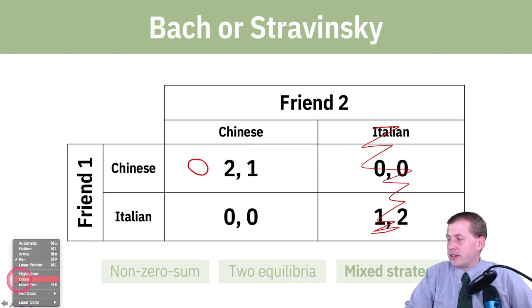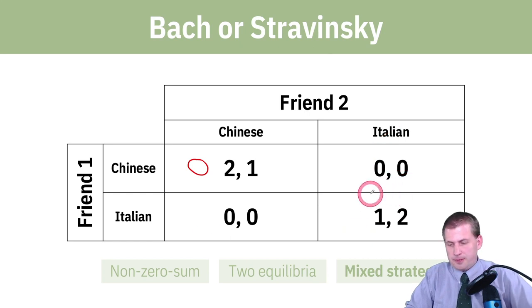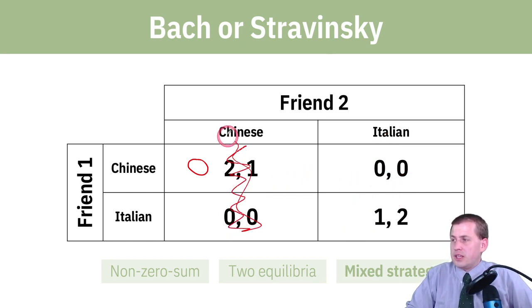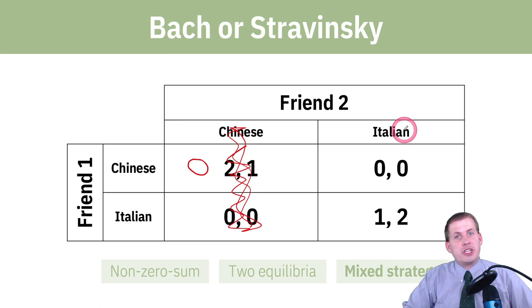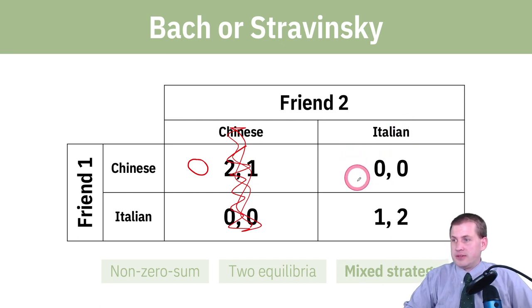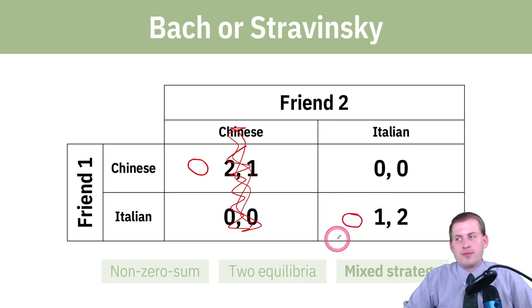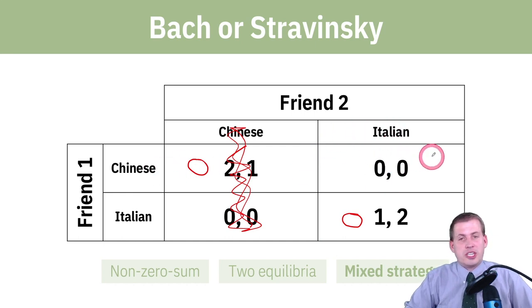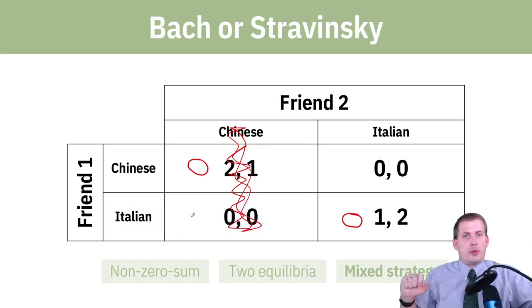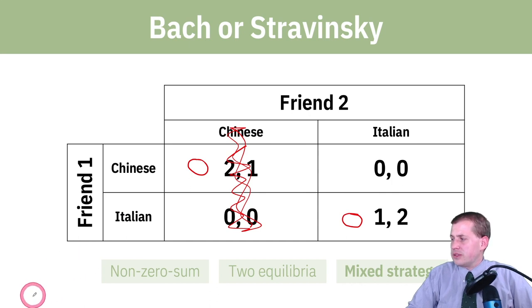Now cover up the Chinese column. Friend two is assumed to be going to Italian — where should friend one go? You could either get zero points if you go to Chinese, or one point if you go to the Italian restaurant, so that's your best option there. So if you assume they're going to go to Italian, you should not choose Chinese; if you assume they're going to Chinese, you should not go to Italian because you'll end up at the wrong place.